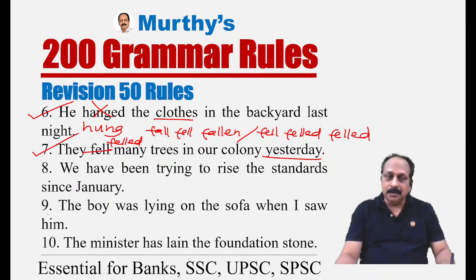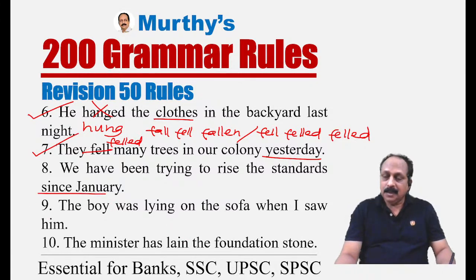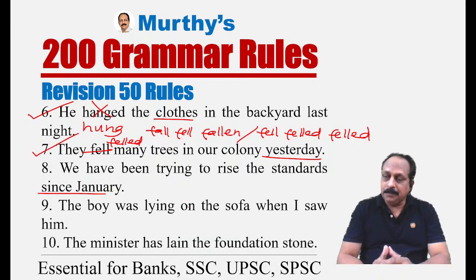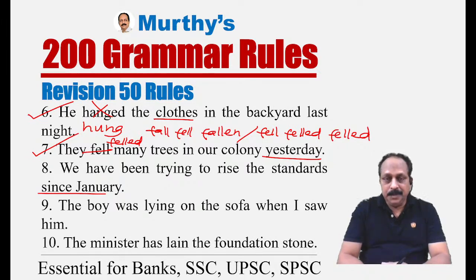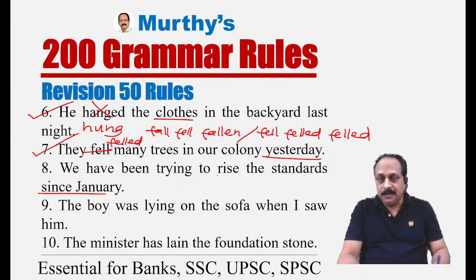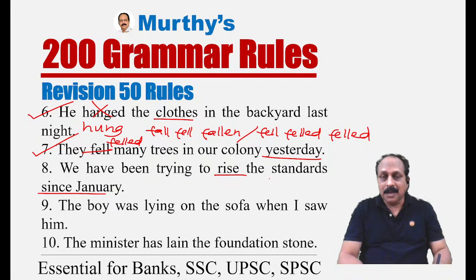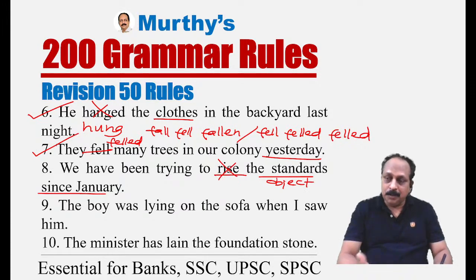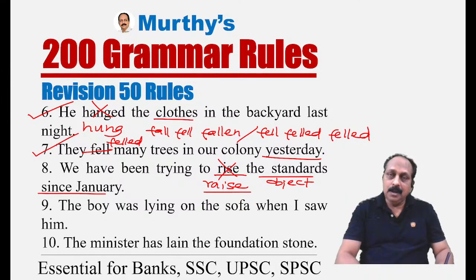Sentence eight: 'We have been trying to rise the standard since January.' The preposition 'since' signals present perfect or present perfect continuous — that part is fine. But 'rise' is an intransitive verb and cannot take an object. Since 'the standards' is an object, we must use the transitive verb 'raise.' The correct sentence is: 'We have been trying to raise the standard since January.'